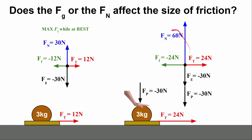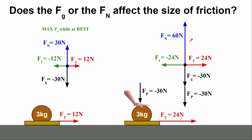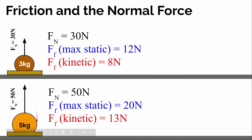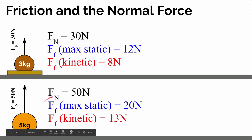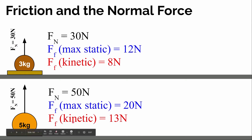So we can't blame the force of gravity for the increased frictional force because it didn't change in size. The normal force doubled — there is twice as much force pushing up on the bottom plastic surface of the sled, pushing these two things together. When the force pushing two surfaces together increases, which is the normal force, that's going to affect the size of the frictional force. So it's the normal force that affects the frictional force. With a normal force of 30 newtons on the 3 kilogram object, the maximum static frictional force was about 12 newtons, and the force of kinetic friction while it was moving at constant speed was about 8 newtons.